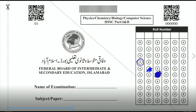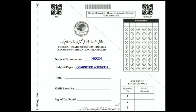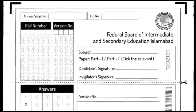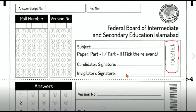The blanks given on the sheet require you to write the name of examination, subject, date, and OMR sheet number to solve the objective paper. The OMR number is given on the sheet on the right side.